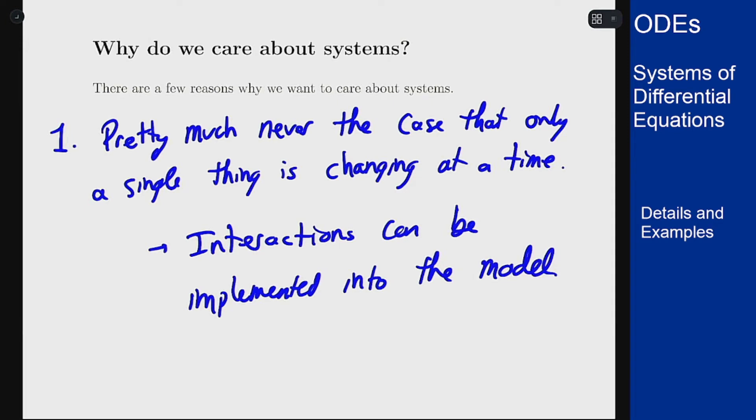So instead of having to arbitrarily assign some value to how some rate affects the problem, we can actually just incorporate that right into the model and then get something that's more accurate to what's going to happen with this actual system.